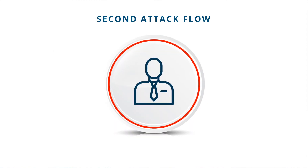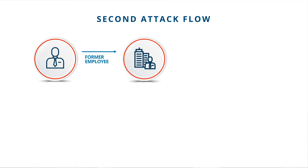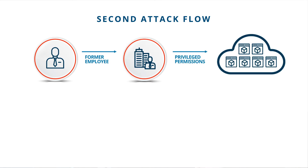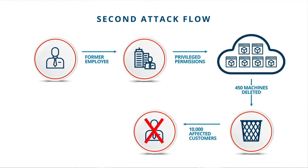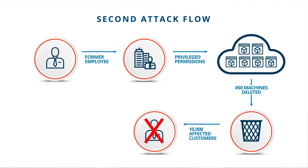In another case, a former employee who left the company decided to take revenge on his former employer. By mistake, the employer forgot to revoke the permissions of that employee when he left the company. The former employee used his assigned role to delete 450 virtual machines from the company's GCP environment. During this unauthorized access, more than 10,000 customers' accounts were shut down for up to two weeks, which caused the company to spend about two and a half million dollars to restore the damage and refund the affected customers.